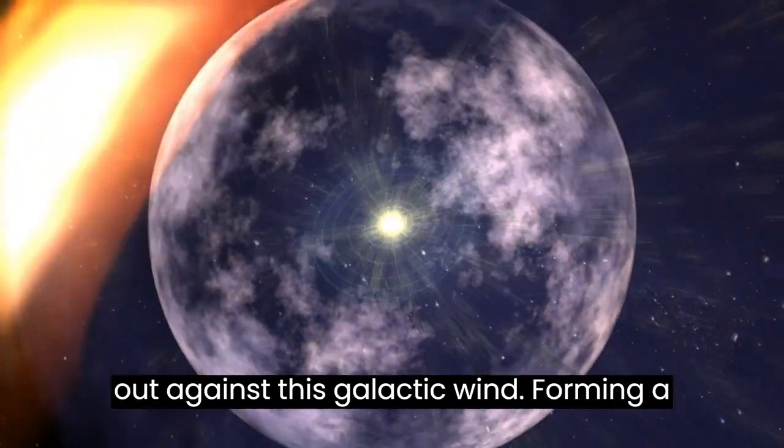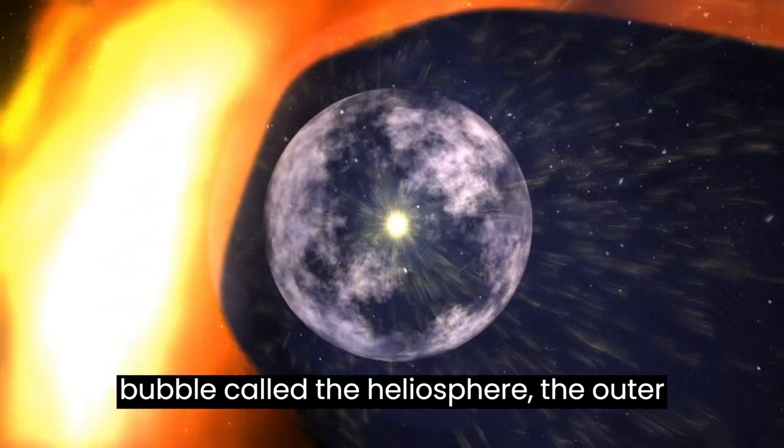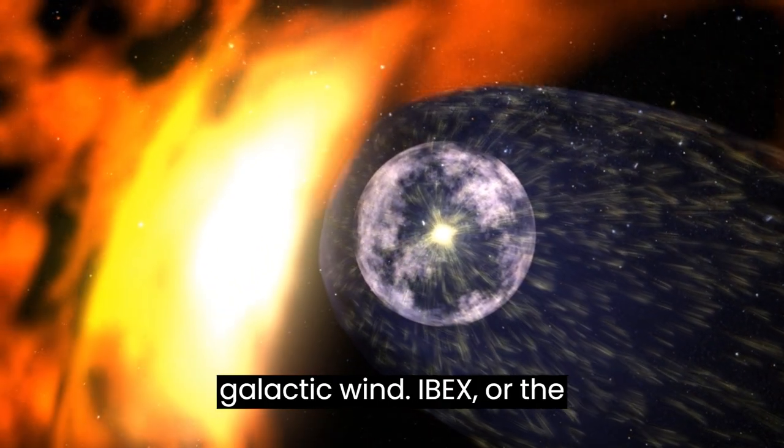The solar wind pushes out against this galactic wind, forming a bubble called the heliosphere. The outer boundary is called the heliopause and is blown into a teardrop shape by the galactic wind.